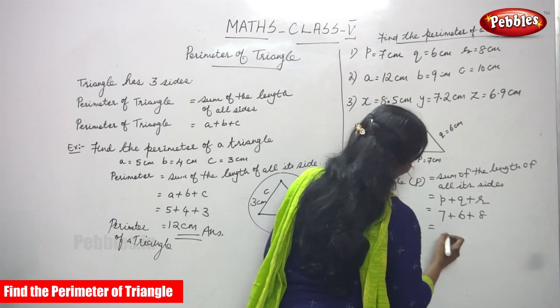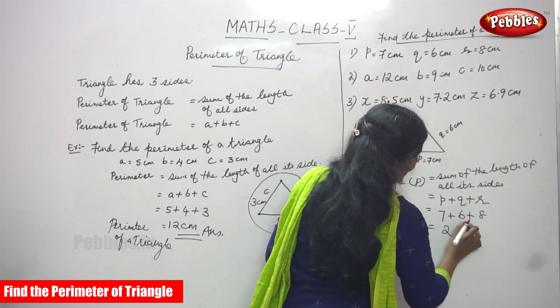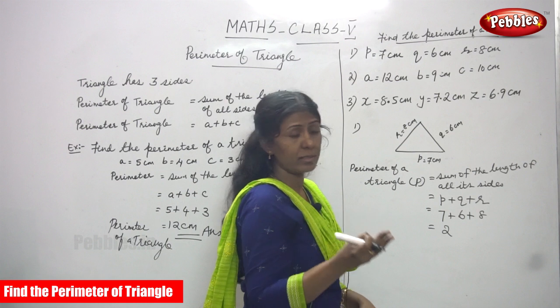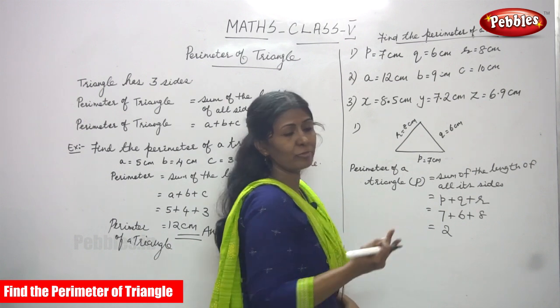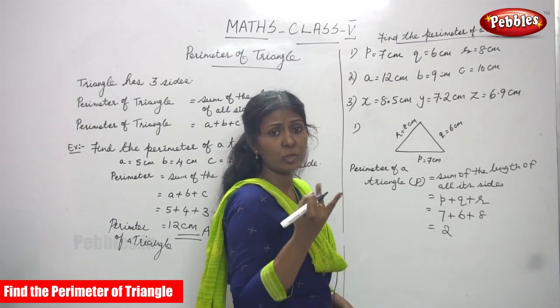So 7 plus 6 is 13. 13 plus 8, what? 7 plus 6, 13. 8, 9, 10, 11, 12, 13. 13 plus 8: 14, 15, 16, 17, 18, 19, 20, 21.